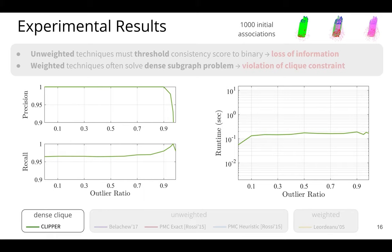So how well does this formulation and the relaxation thereof perform? Here are some results of CLIPPER. And the scenario here is we use the Stanford bunny and we vary the outlier ratio of the 1000 initial associations shown here on the x-axis. And we're going to report the precision and recall, where of course precision and recall of one is the very best. So we see that CLIPPER runs in about 100 milliseconds and is able to achieve 100% precision up until about 90% outlier regime.